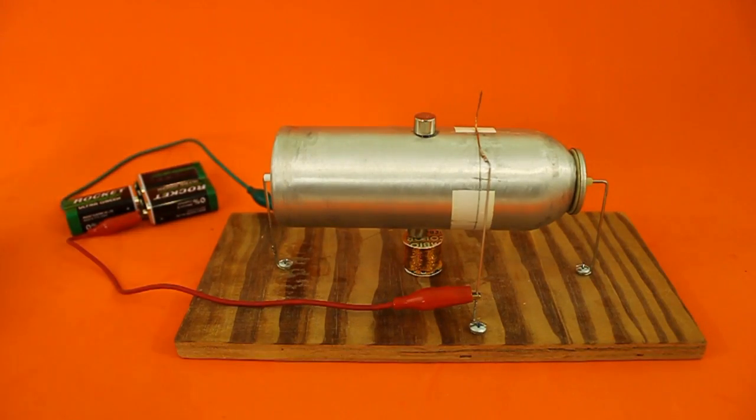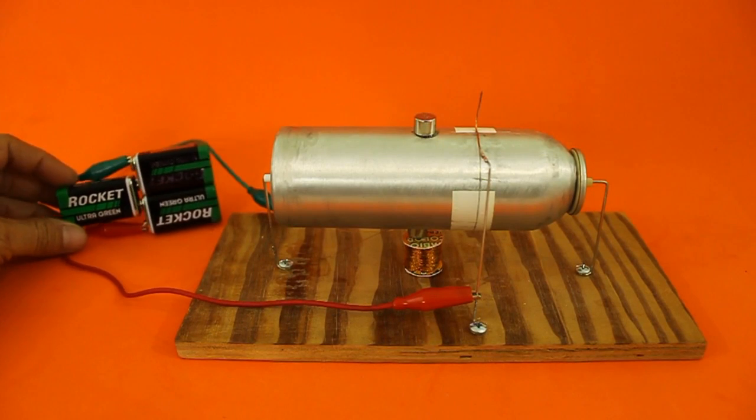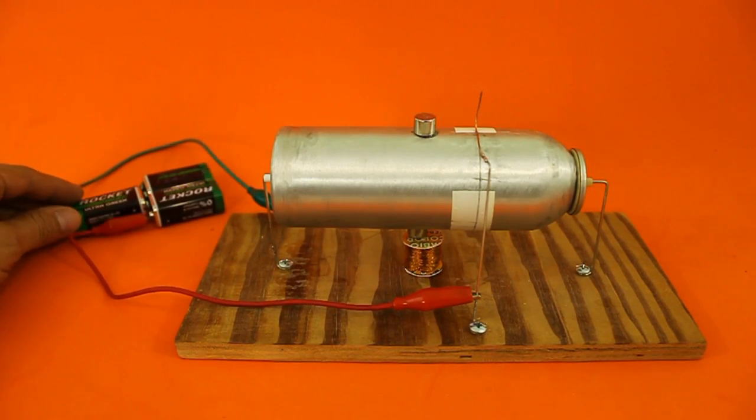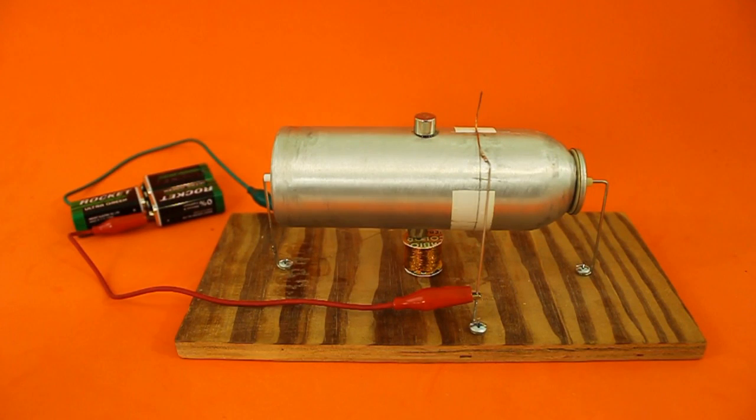We are powering the motor with three 9-volt batteries or 27 volts. The reason we need that much is that the coil is made with very thin wire. If you use thicker wire, you will need less voltage to operate.